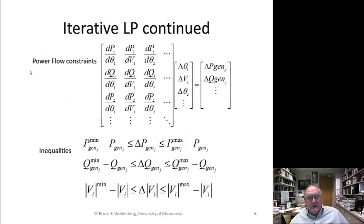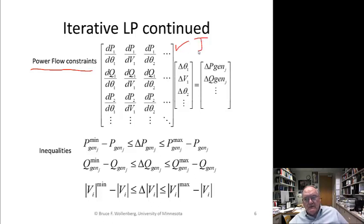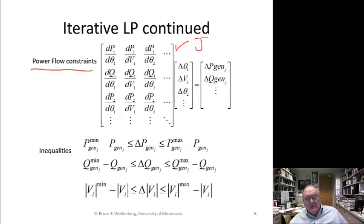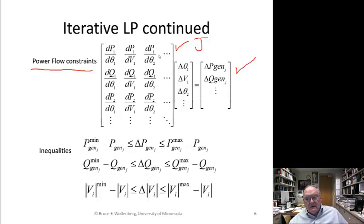Here are the power flow equations. When you take the derivatives, this should be familiar — this is the Jacobian matrix that we use in the Newton power flow. One of the things we do in the LP method is solve it, then go back and solve the power flow, just transferring the Jacobian values into the LP. This is now considered a set of linear equations that we use inside the LP.